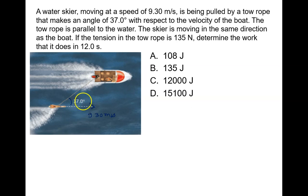The tow rope is parallel to the water. The skier is moving in the same direction as the boat. The tension in the rope is 135 newtons. Determine the work done in 12 seconds.